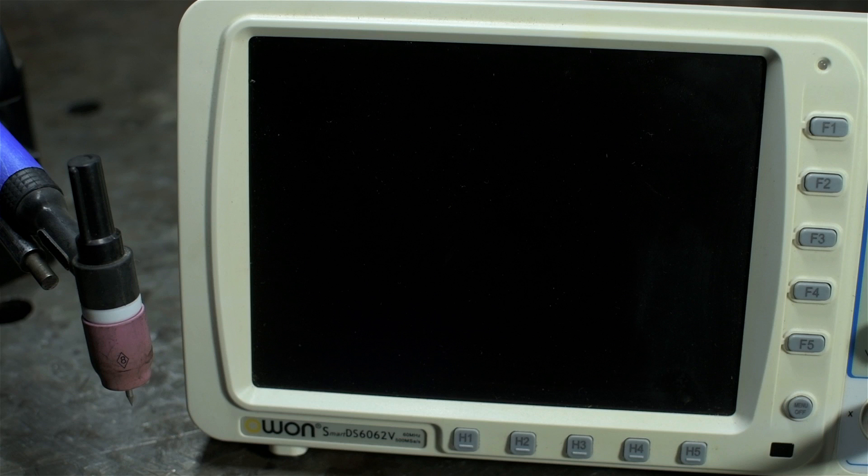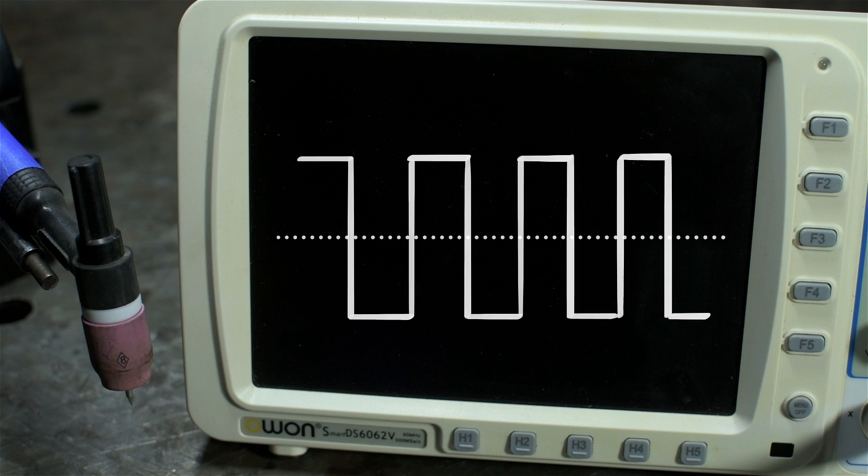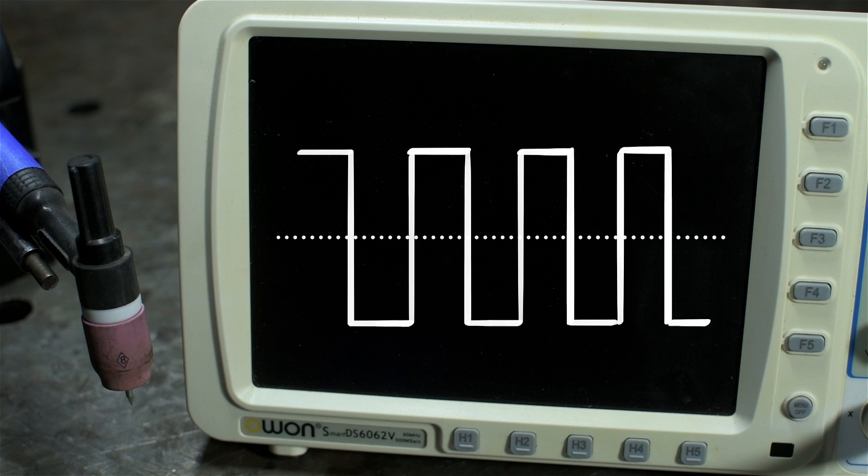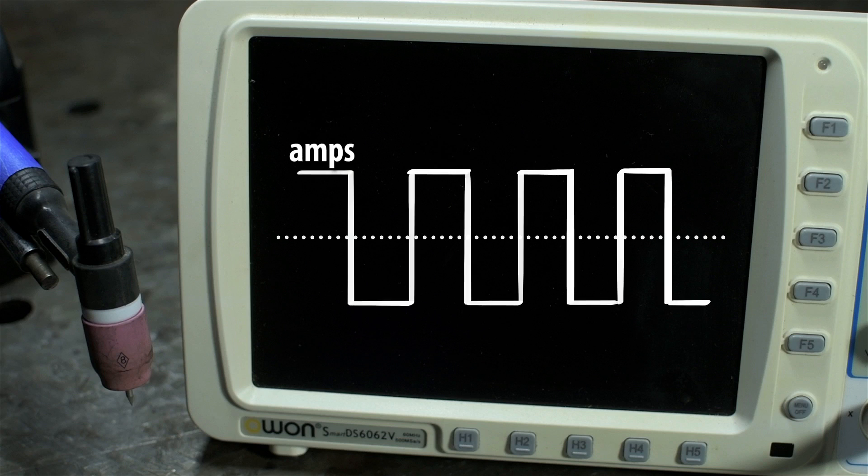My welder, as with most modern inverters, outputs a square wave, and principally, you can control the amperage, of course. That's the whole point. And in AC welding mode, the frequency.